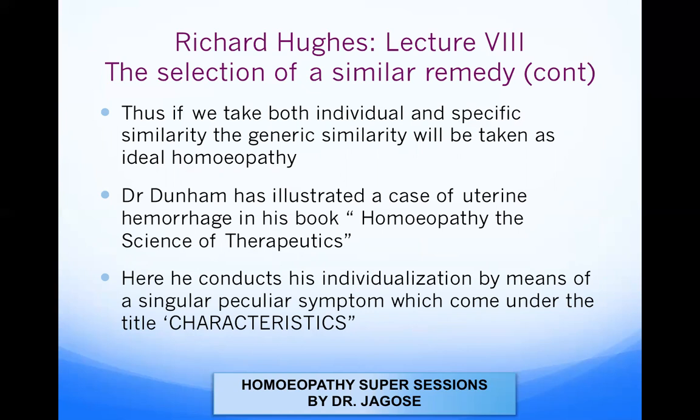If we take both individual and specific similarity, along with generic similarity, this will be taken as ideal homeopathy. Dr. Dunham has illustrated a case of uterine hemorrhage in his book 'Homeopathy: The Science of Therapeutics' to demonstrate this principle.